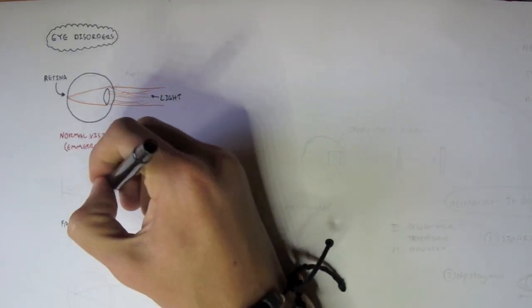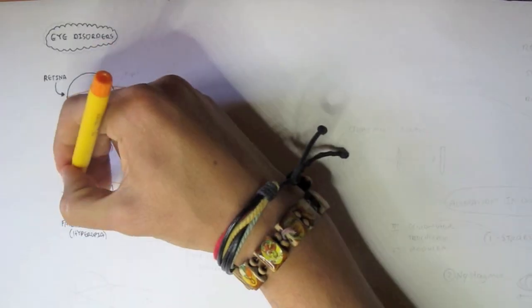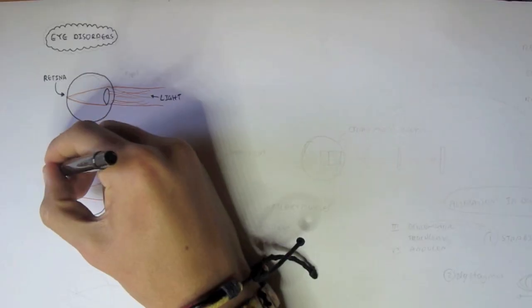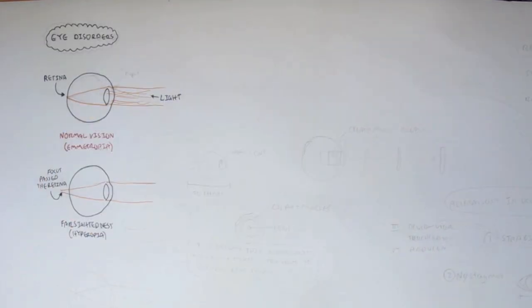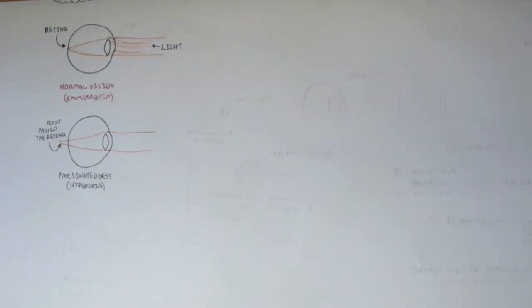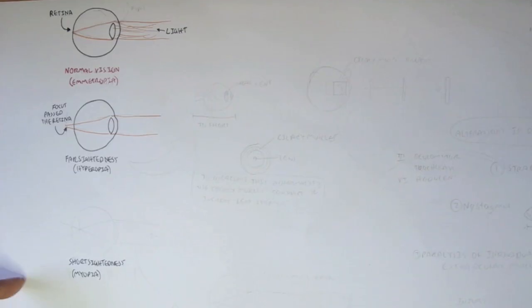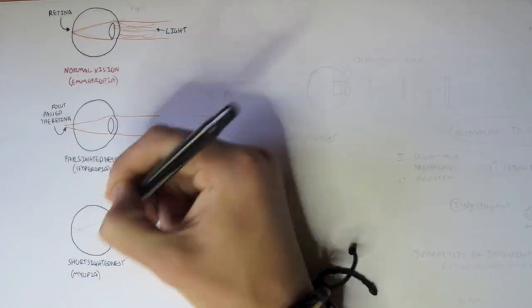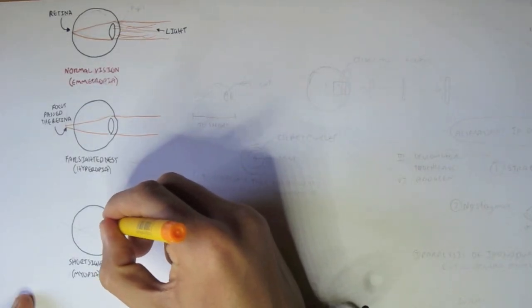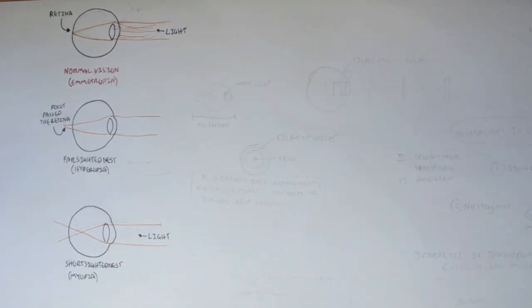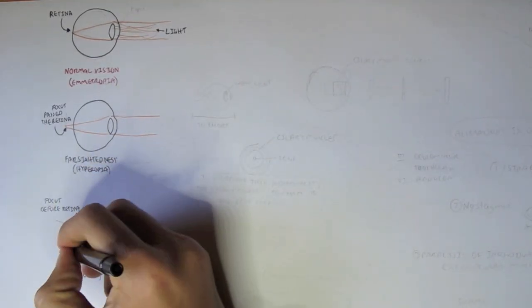However, there are eye conditions called farsightedness or hyperopia, where the light comes in again and the lens refracts it but it doesn't focus it at the back, it passes the retina. So the actual focus is past the retina, and so this is known as farsightedness. Another condition called shortsightedness or myopia, and this is the opposite of hyperopia, where light enters the eyeball, and the lens refracts it but refracts it before it hits the retina.